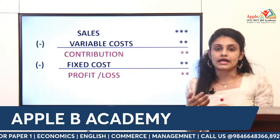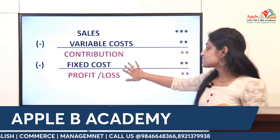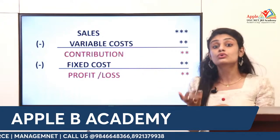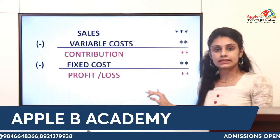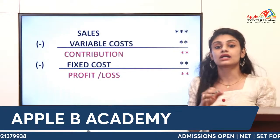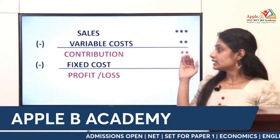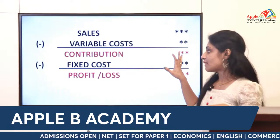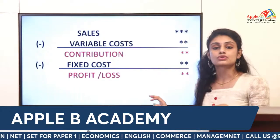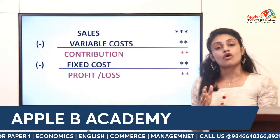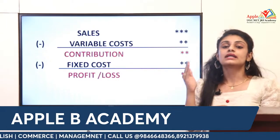So 3 is your profit because it is a positive value. If you have a negative value — that is, if fixed cost exceeds contribution — you will get a loss. So the basic equation is: Sales minus variable cost equals contribution; contribution minus fixed cost gives profit or loss. Positive value is profit, negative value is loss.